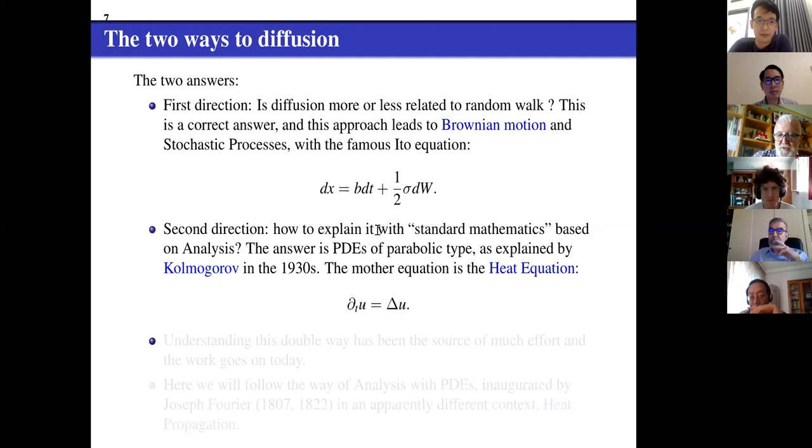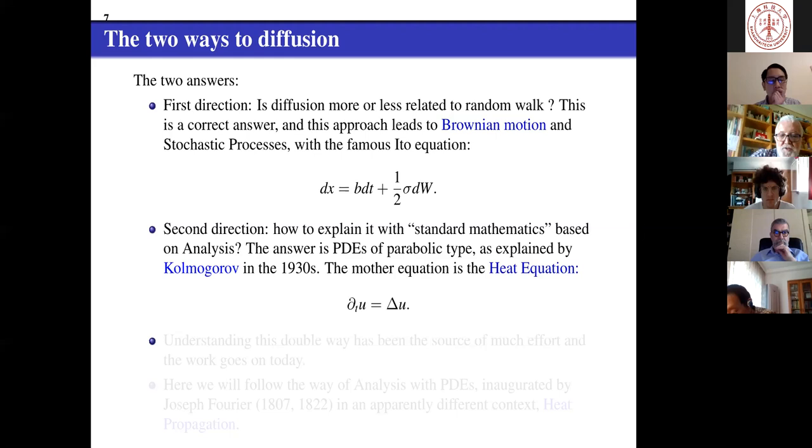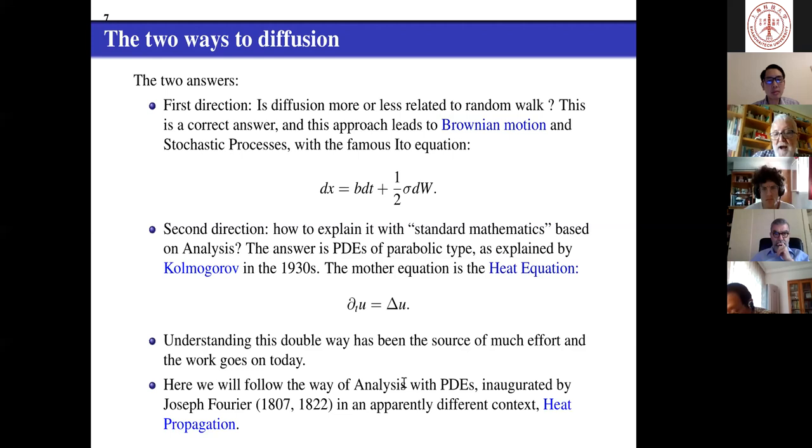In analysis what we do is start with the heat equation and it took a long time until people made the connection between equation one and equation two. Several people were involved, but the glory goes to Kolmogorov. The heat equation started before stochastic processes, due in principle according to history to Joseph Fourier around 1800, the systematic work of heat equation beginning with heat propagation.